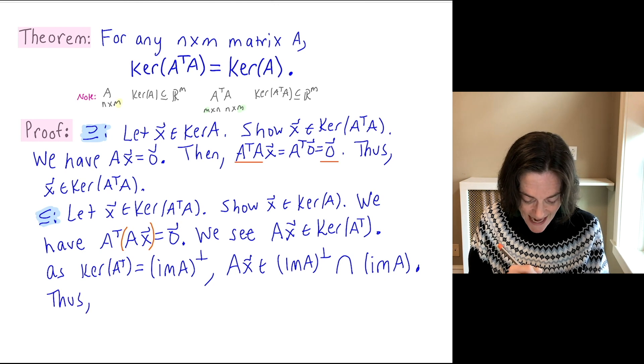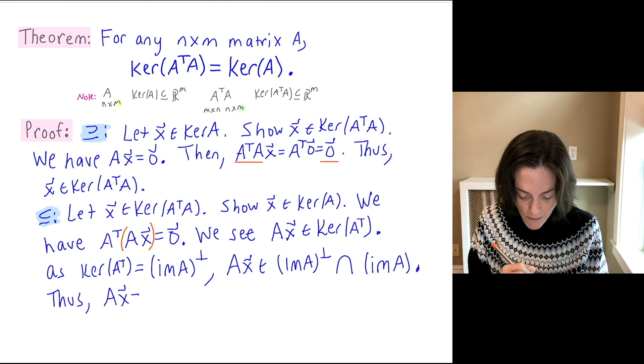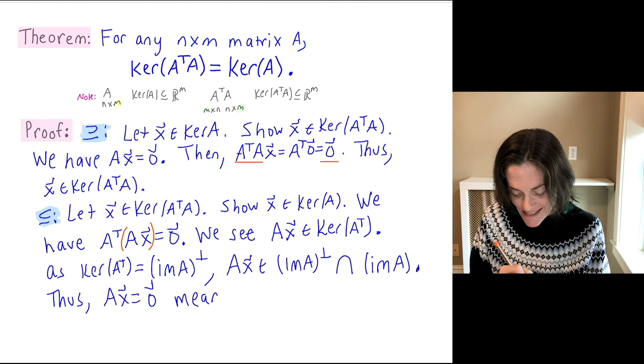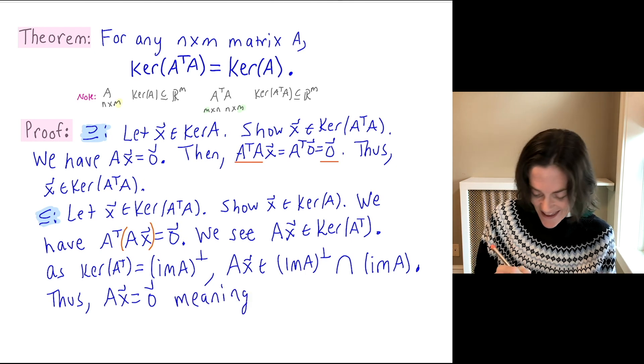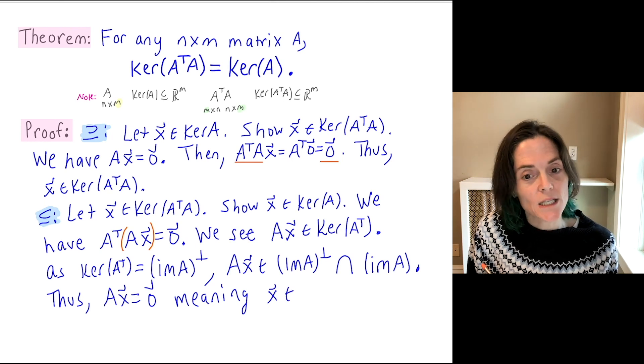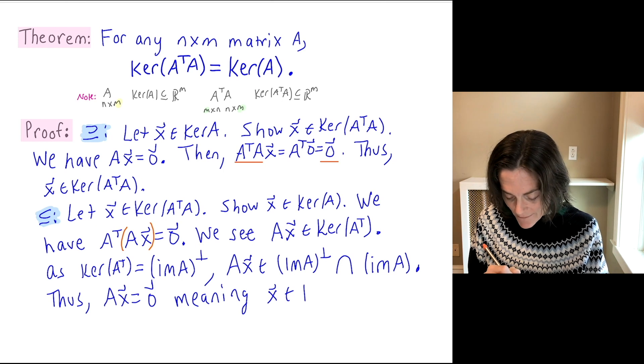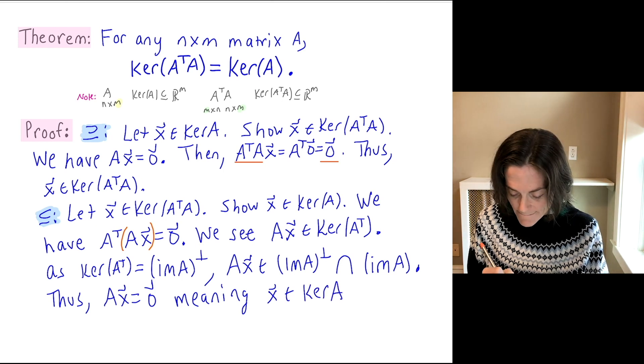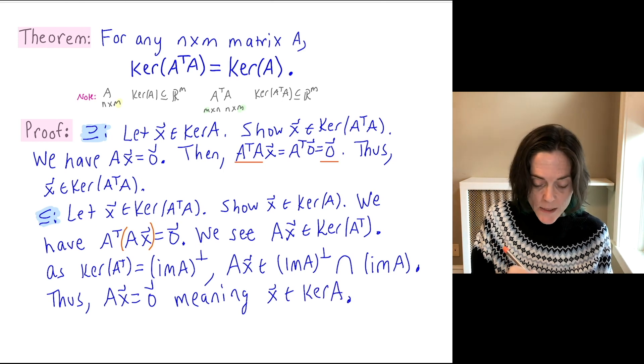So this says that Ax must be the zero vector. And this means x is in the kernel of A. So this other direction took a little more work. It took more theory, but it was quite fun. And this completes this proof.